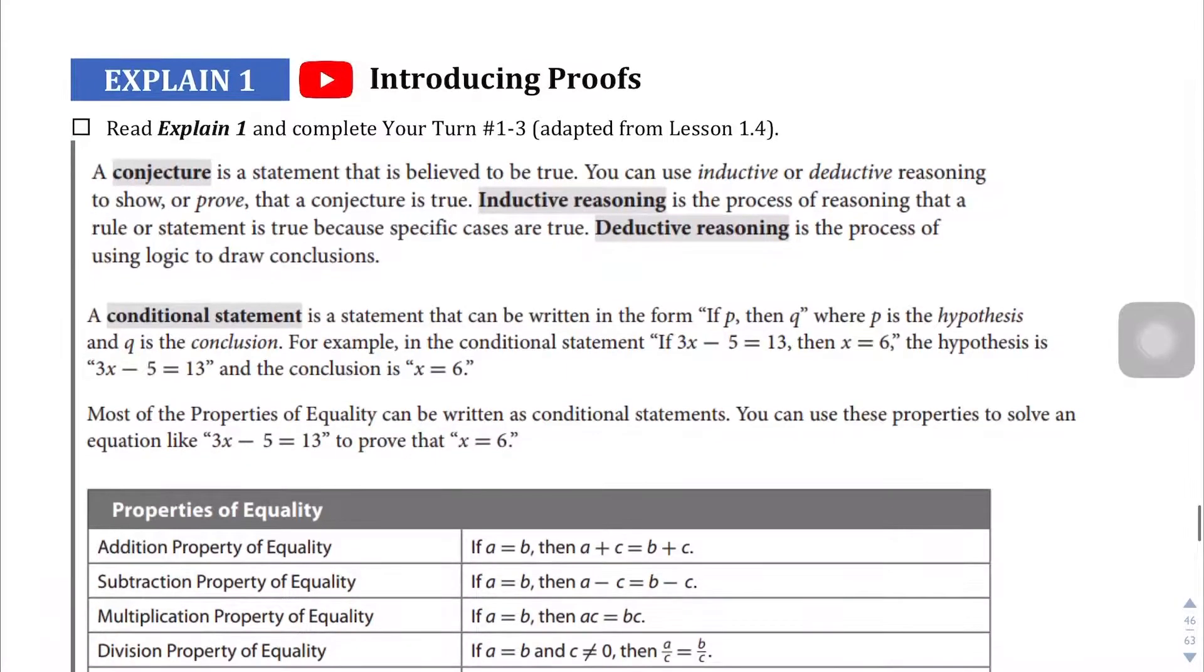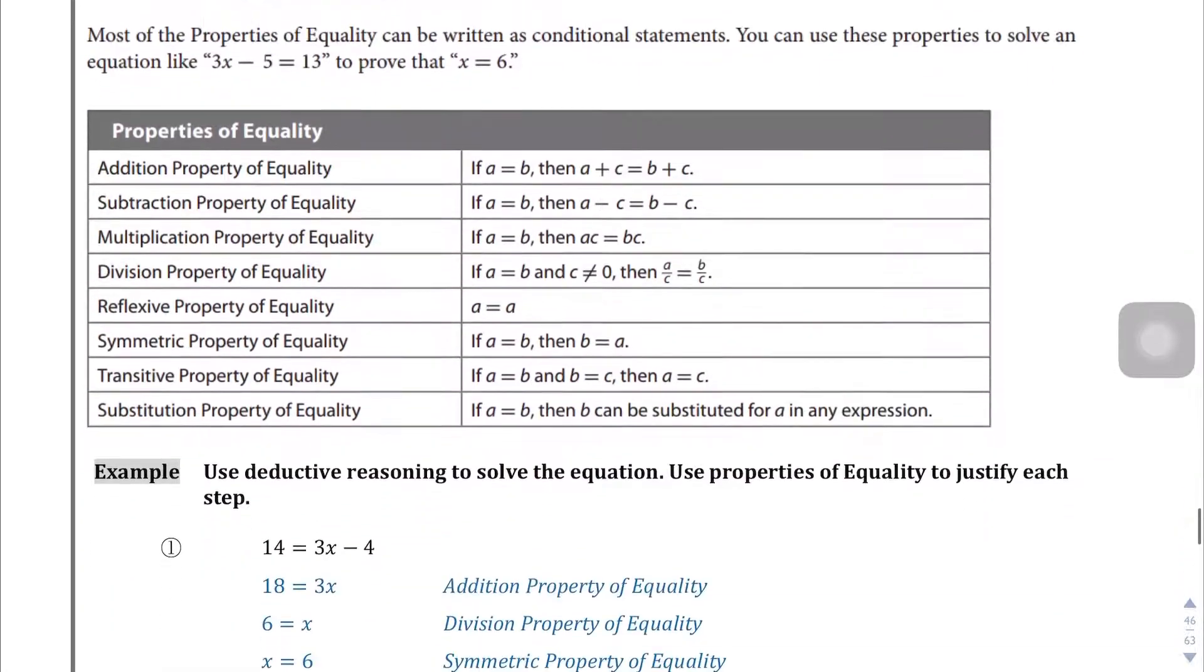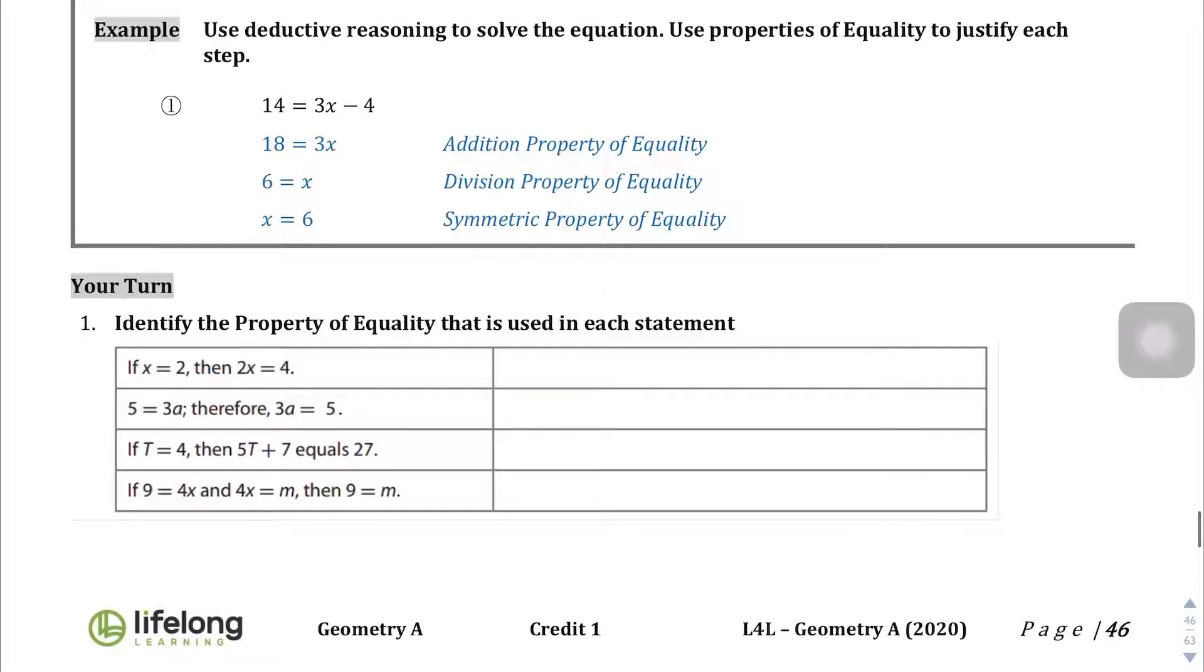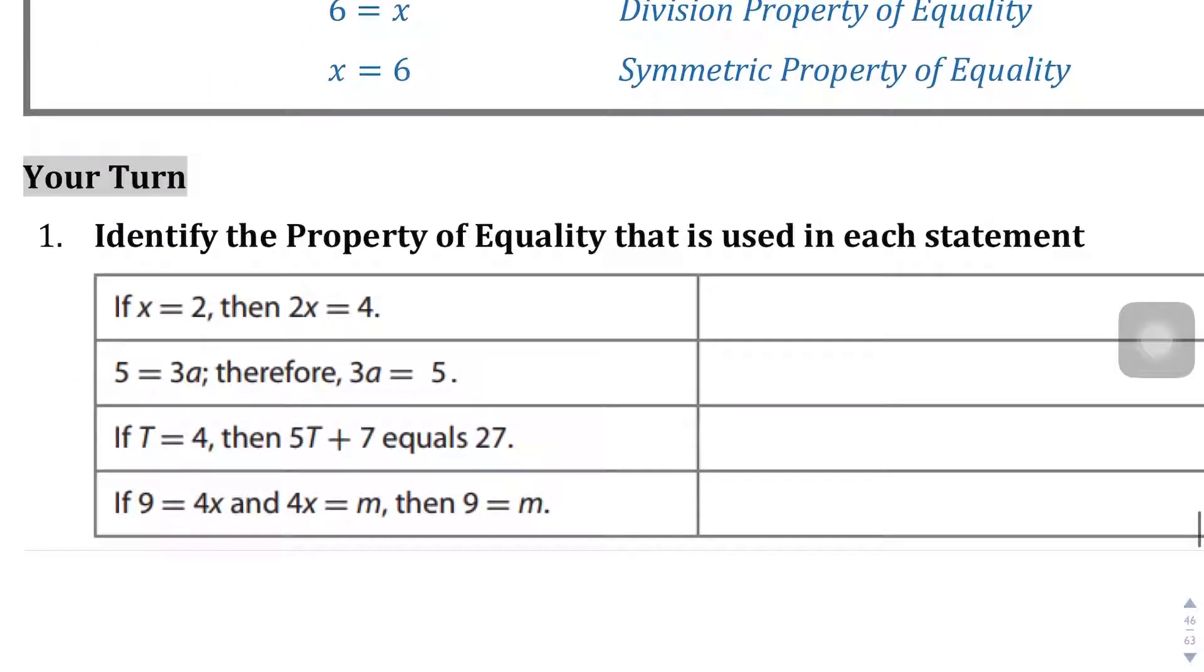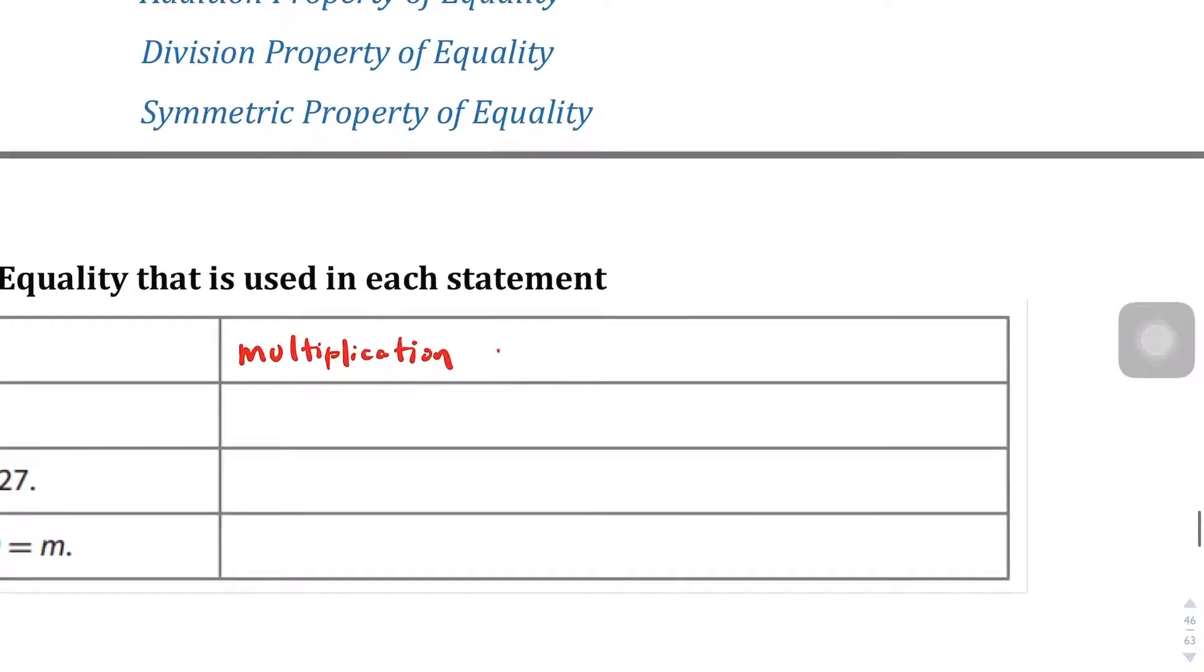In this next section, we're going to be introducing proofs, which some people love, some people hate. We're going to be using the properties of equality to be doing this. It's really not super complicated, the properties of equality just give a justification for why you're doing what you're doing. For example, if we take a look at this first step, if x equals 2, then 2x equals 4. How did you get from this to this? We multiplied both sides by 2, therefore we're going to say the multiplication property of equality.